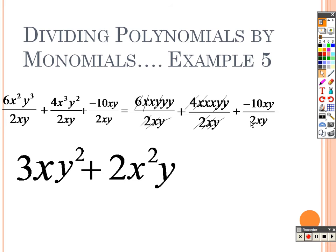Over here, I have a negative 10 and a 2. Negative 10 divided by 2 is negative 5. The x's — there's one on both the top and the bottom. And there's a y on both the top and the bottom. Are there any x's or y's left on the top? Nope. That's why there are no other x's or y's left over in this problem. And there is that polynomial divided.